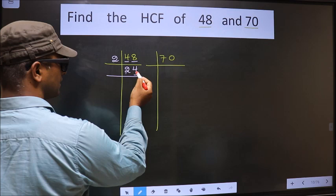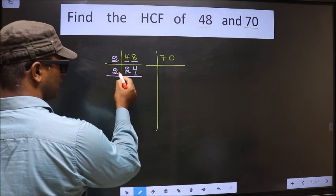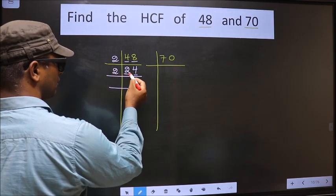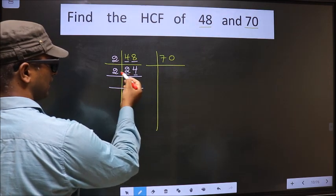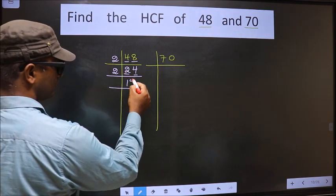Now for this number, last digit 4, even, so we take 2 here. The first number, 2. When do we get 2 in 2 table? 2 times 1 is 2. The other number, 4. When do we get 4 in 2 table? 2 times 2 is 4.